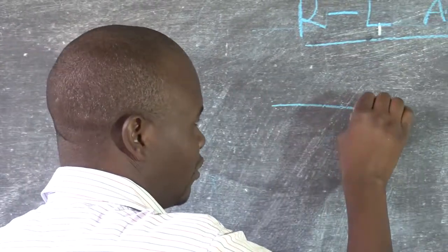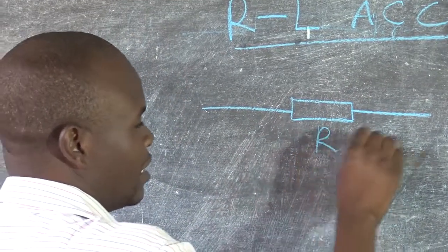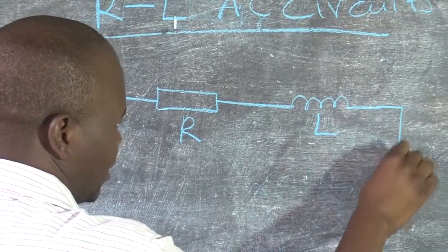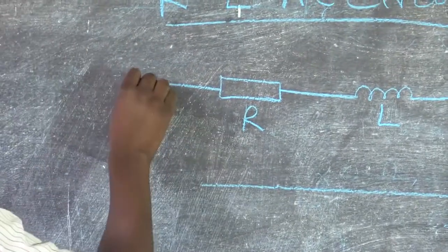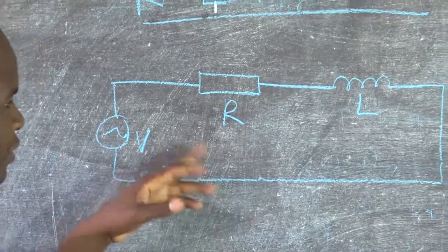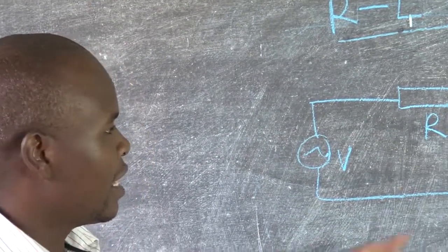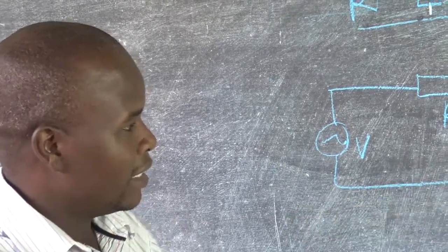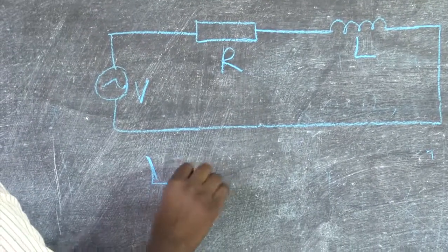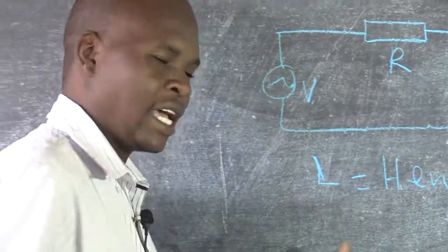So if you want to construct a circuit, you might use this symbol to represent resistance and this coil to represent inductance. This coil represents inductance — the name of this component is the solenoid. This is a symbolic circuit of an AC circuit. We know R. Inductance L is measured in Henry — that is its SI unit.